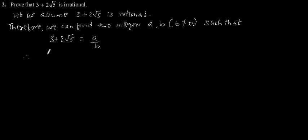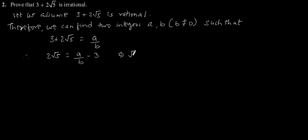Therefore, 2 root 5 is equal to a by b minus 3. This implies, after rearranging this equation, we will get square root of 5 is equal to 1 by 2 under bracket a upon b minus 3.